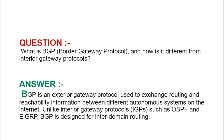Our next interview question is: What is BGP, i.e., Border Gateway Protocol, and how is it different from Interior Gateway Protocol? Your answer should be: BGP is an exterior gateway protocol used to exchange routing and reachability information between different autonomous systems on the internet. Unlike Interior Gateway Protocols (IGPs) such as OSPF and EIGRP, BGP is designed for inter-domain routing.